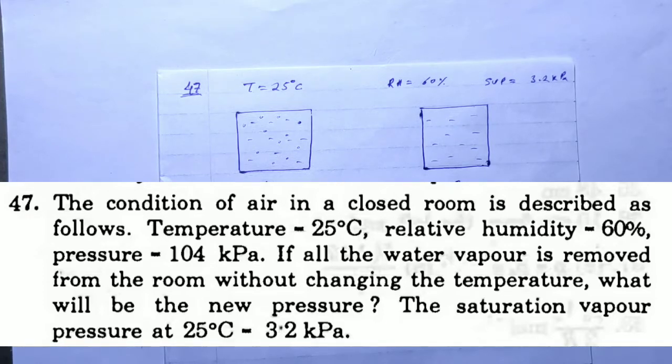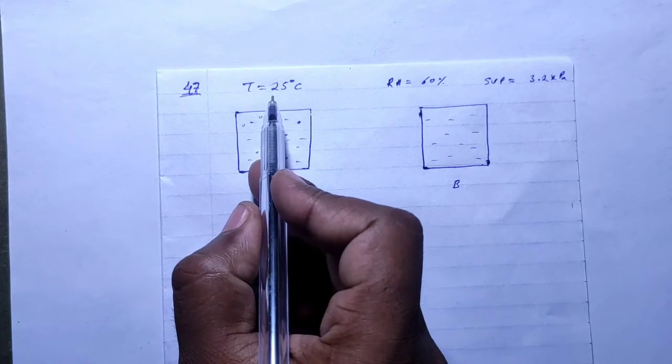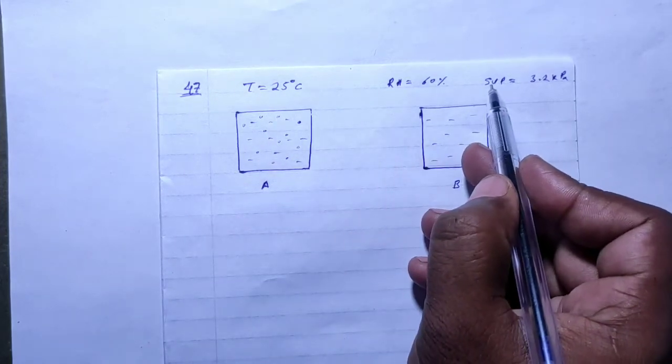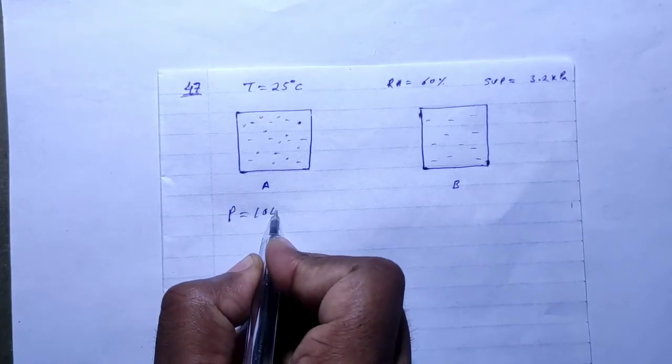at 25°C equals 3.2 kPa. Okay, so I have this room at temperature 25°C, relative humidity 60%, saturation vapor pressure is 3.2 kPa, and the current pressure is 104 kPa.